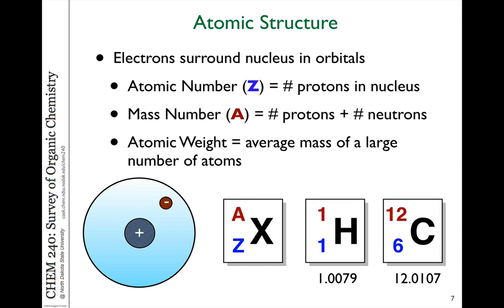We describe atoms in terms of their atomic number and mass number, and these are listed on the periodic table. The atomic number Z refers to the number of protons in the nucleus, and in a neutral atom, the number of protons equals the number of electrons. So in a neutral atom, this is also the number of electrons surrounding the nucleus.